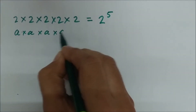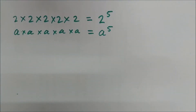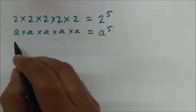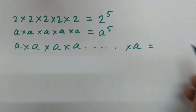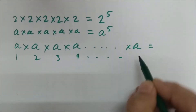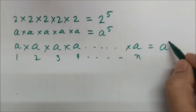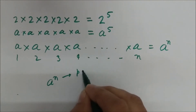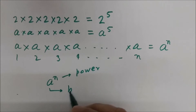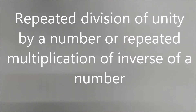Similarly, any number 'a' taken five times can be expressed as a raised to the power 5. If it is taken n times, it is expressed as a raised to the power n. Here, in a raised to the power n, 'n' is called the power while 'a' is called the base. We read it as 'a raised to the power n.' This shows how repetitive multiplication is expressed using indices.